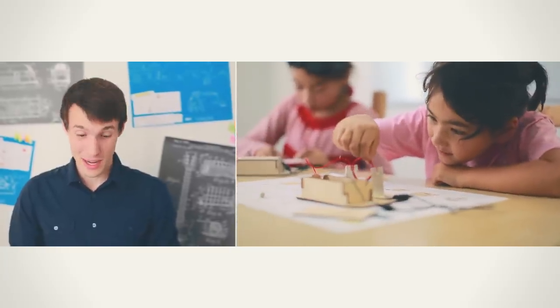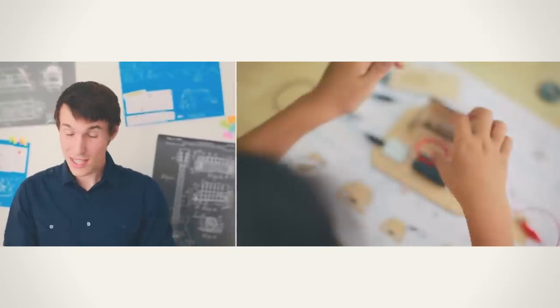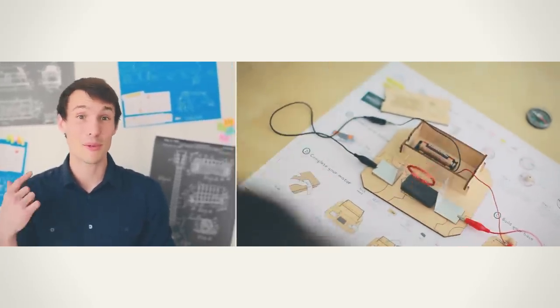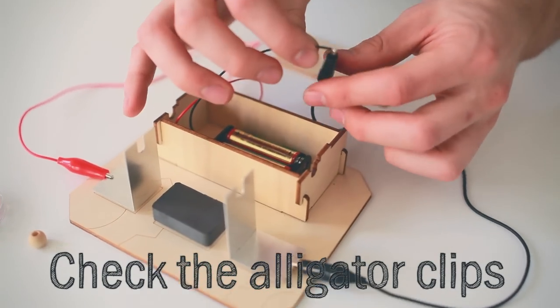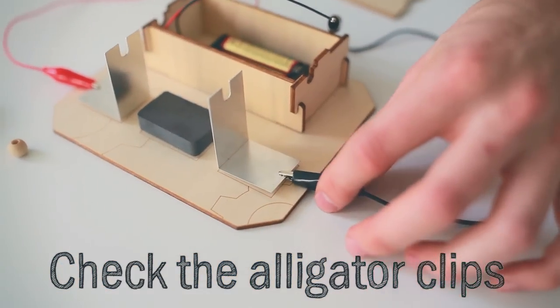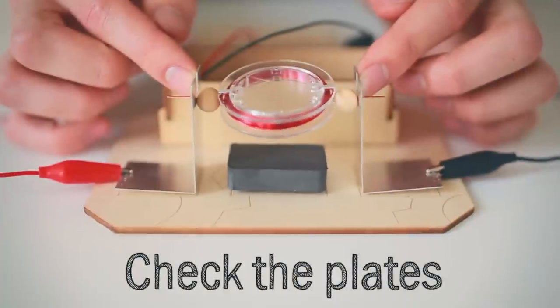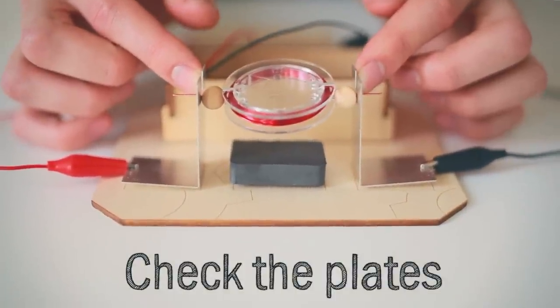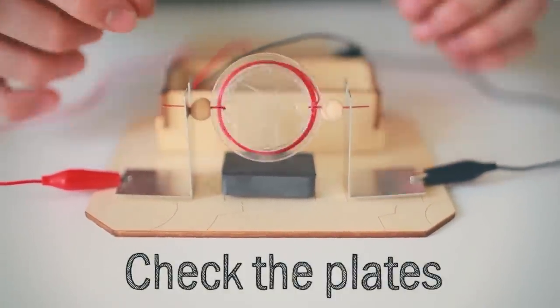If your motor doesn't start spinning right away, don't despair. There are a few easy checks you can do that'll get it up and running. Make sure your alligator clips are snugly attached to the metal and then also to the aluminum plates. Make sure that your aluminum plates aren't squeezing on your coil. If they're squeezing, they won't be able to spin.